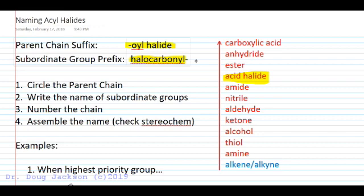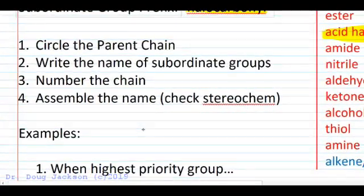As always with these naming challenges, we're going to circle the parent chain to make sure we don't make mistakes, write the names of the subordinate groups, number the chain, and assemble the name checking for stereochem.